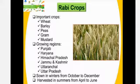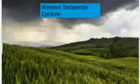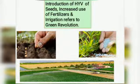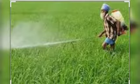The Rabi season is from the month of October to December when the crops are sown. The crops are harvested in the month of April to June. The ripening of the Rabi crop is celebrated mostly in the month of April through different harvest festivals like Baisakhi in Punjab. Some of the important Rabi crops are wheat, barley, peas, gram and mustard.